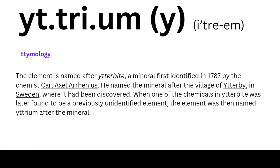Yttrium. The element is named after itabite, a mineral first identified in 1787 by the chemist Karl Axel Arrhenius. He named the mineral after the village of Ytterby, in Sweden, where it had been discovered.